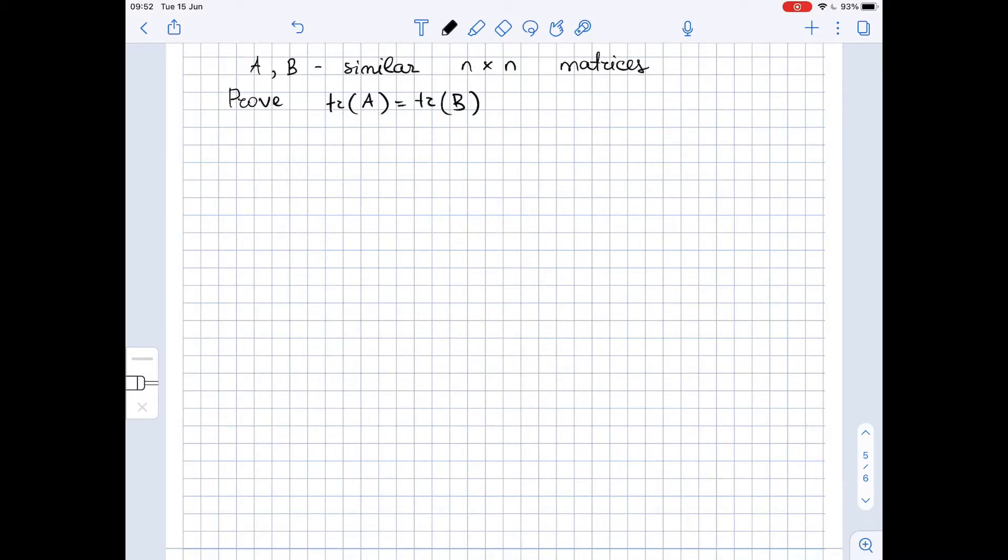A and B are similar n by n matrices and we need to prove that the trace of matrix A equals the trace of matrix B. Let's see how we can do it.